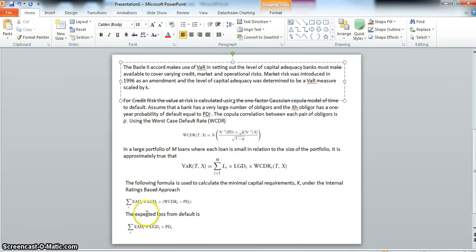For regulatory capital, the formula that we use consistent with the internal ratings-based approach is the exposure at default times loss given default, and then the difference between the worst-case default rate minus the probability of default, the expected level of loss.